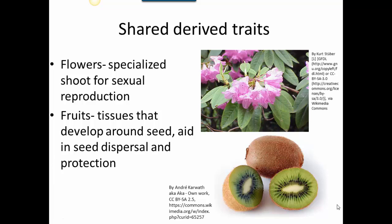Now let's examine the traits that make the angiosperms special — their shared derived traits. These are traits that all angiosperms have in common and that none of the other plants we've examined have, including the bryophytes, gymnosperms, seedless vascular plants, and lycophytes. The shared derived traits of the angiosperms are their flowers and their fruits — no other plants generate flowers, and no other plants generate fruits.